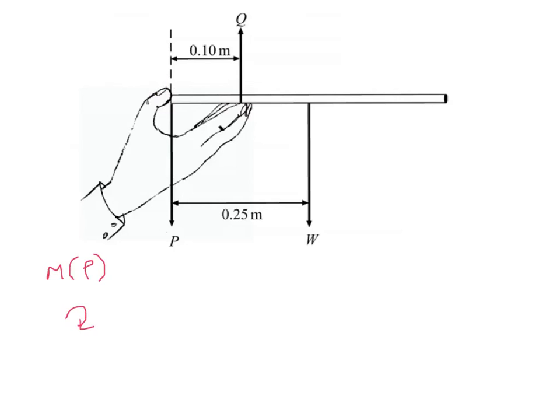You've got P, and its perpendicular distance in this case is zero because we're taking moments about the point where it acts, plus W times 0.25.